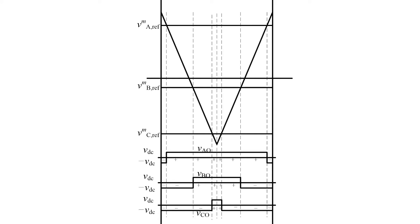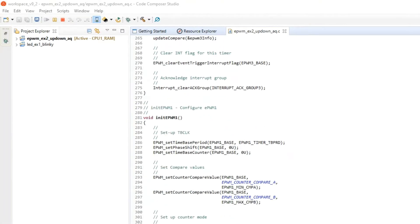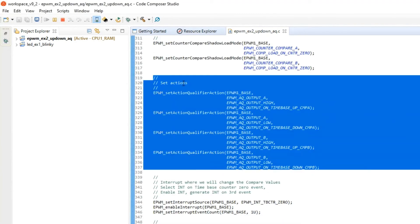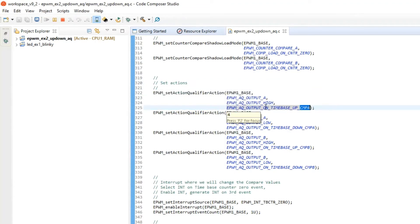The counter register goes from TBPRD down to 0, then increments back to TBPRD. Whenever the compare register value equals the counter register value during the downward direction, we want the PWM signal to go high. When it is in the upward direction and the compare register value equals the counter register value, we want the PWM signal to go low. Looking at the InitEPWM block, you can see the set action: in up direction, when counter equals compare register, the output of EPWM1A is set high.